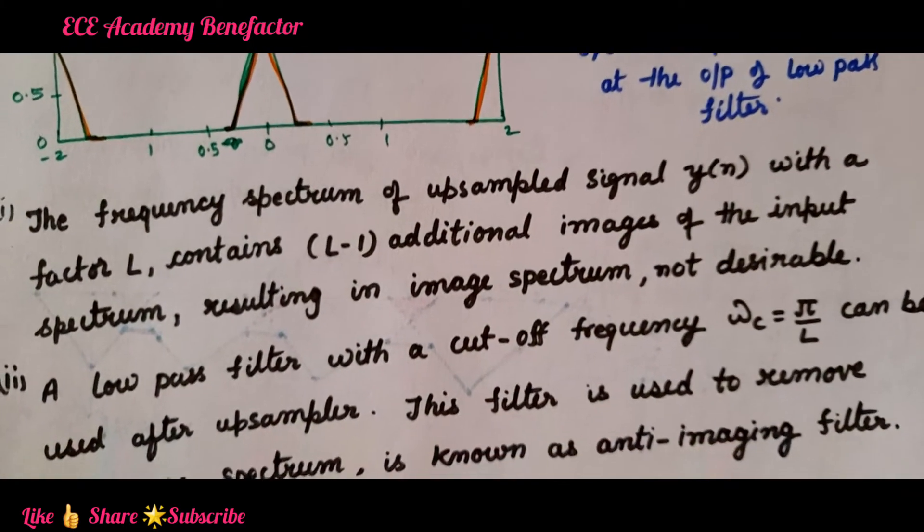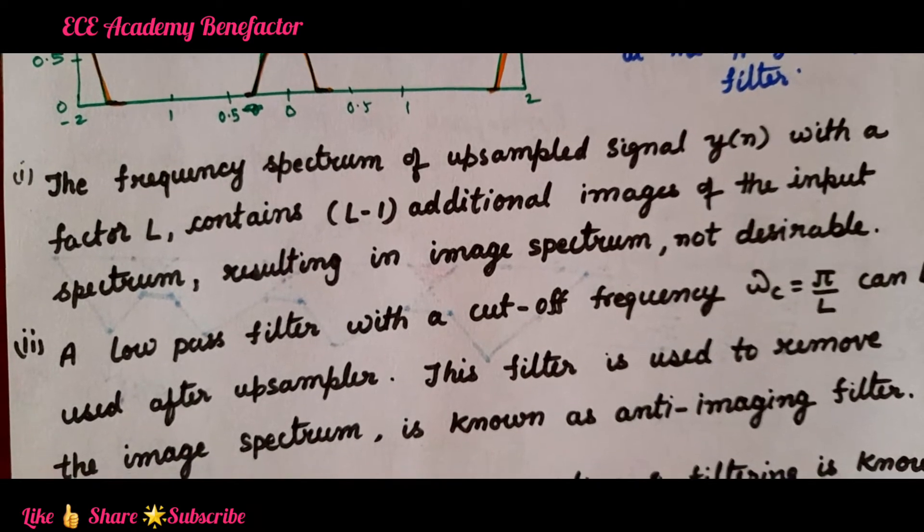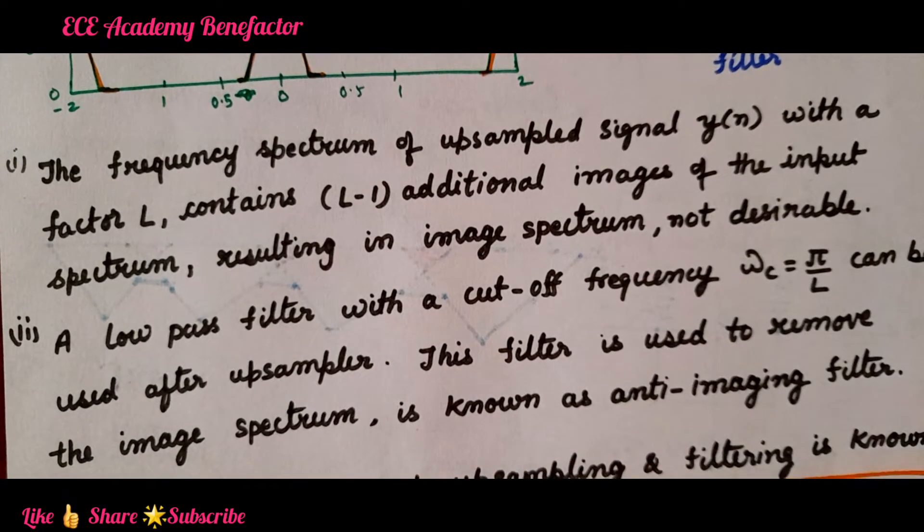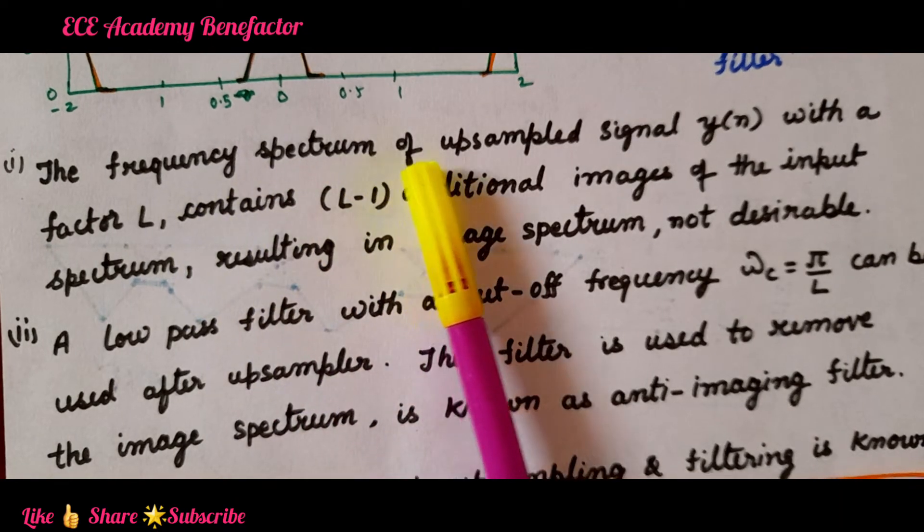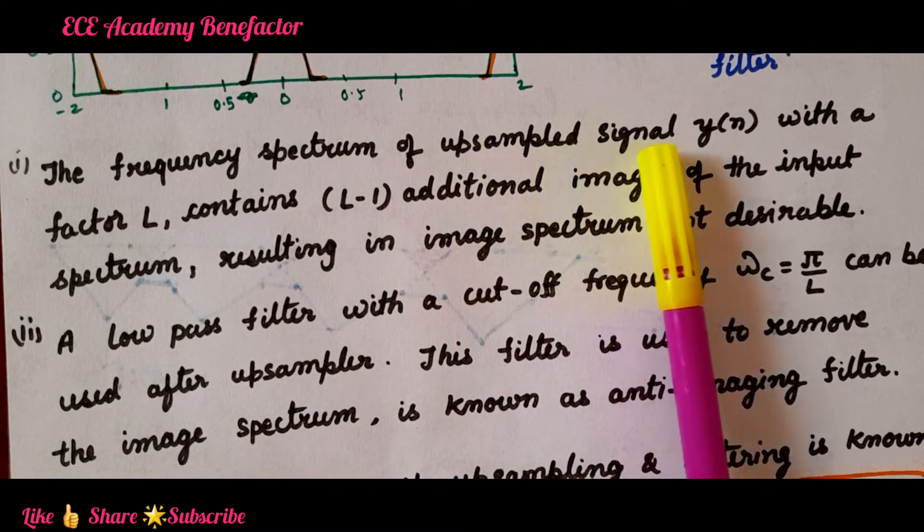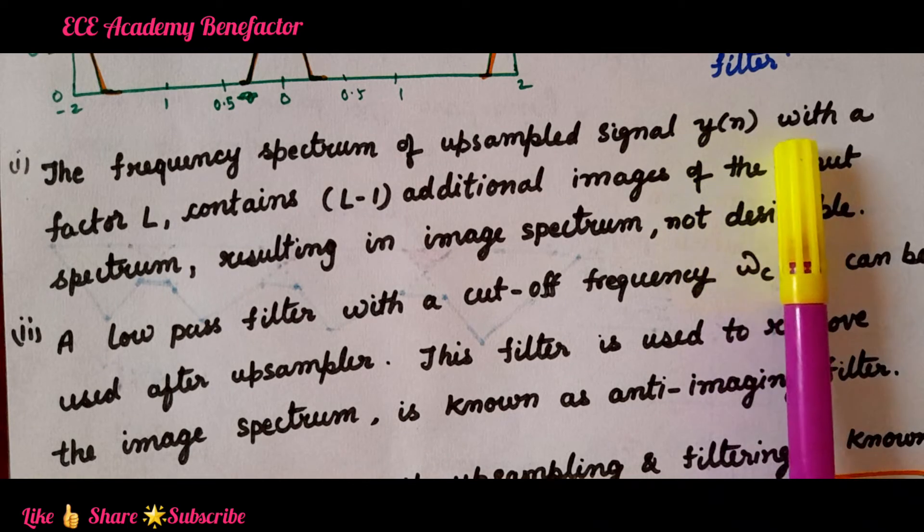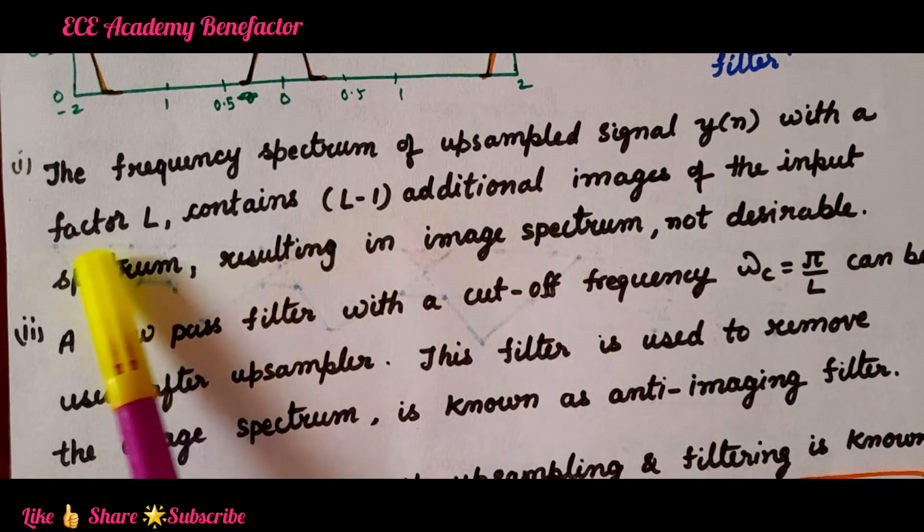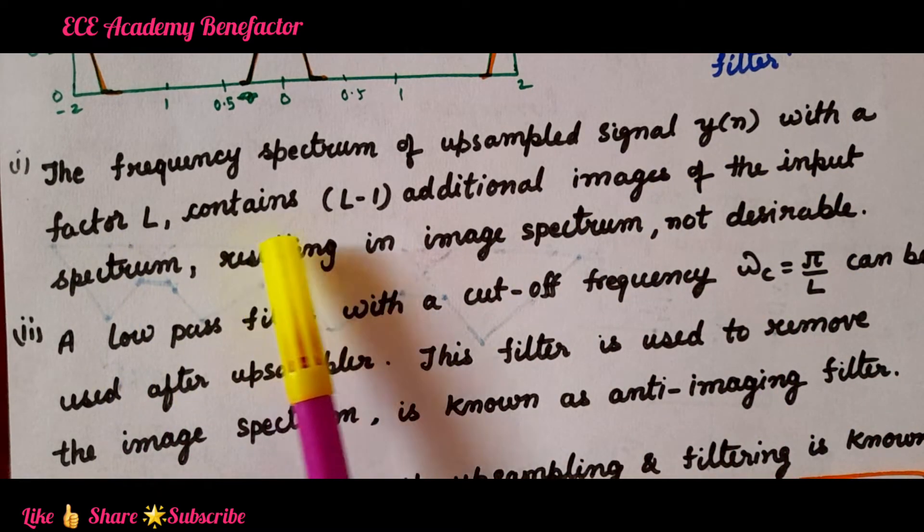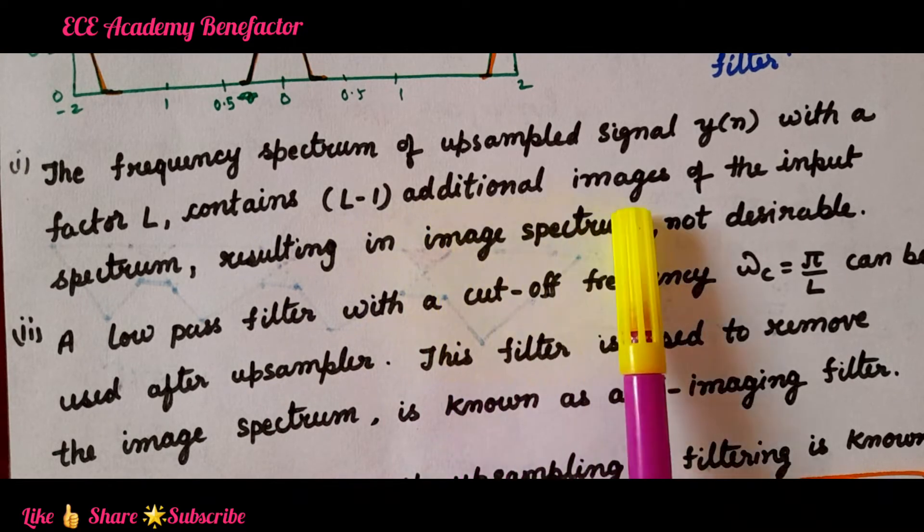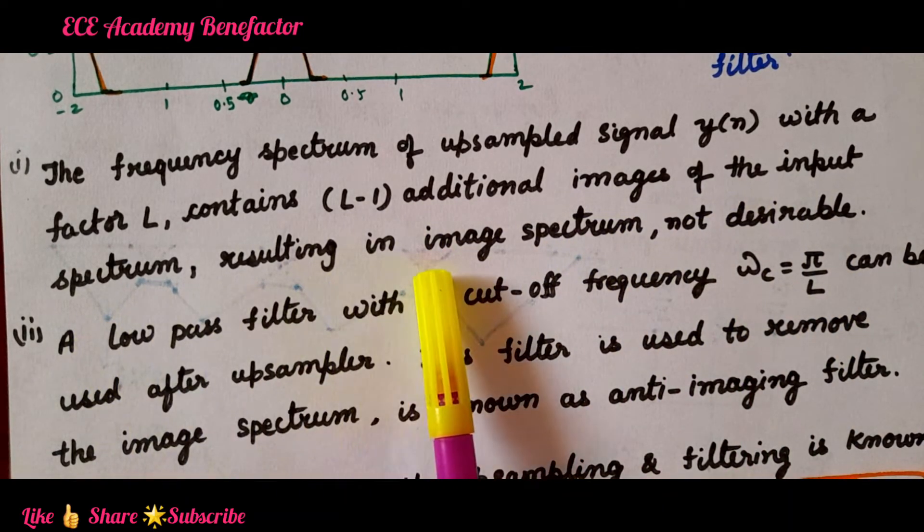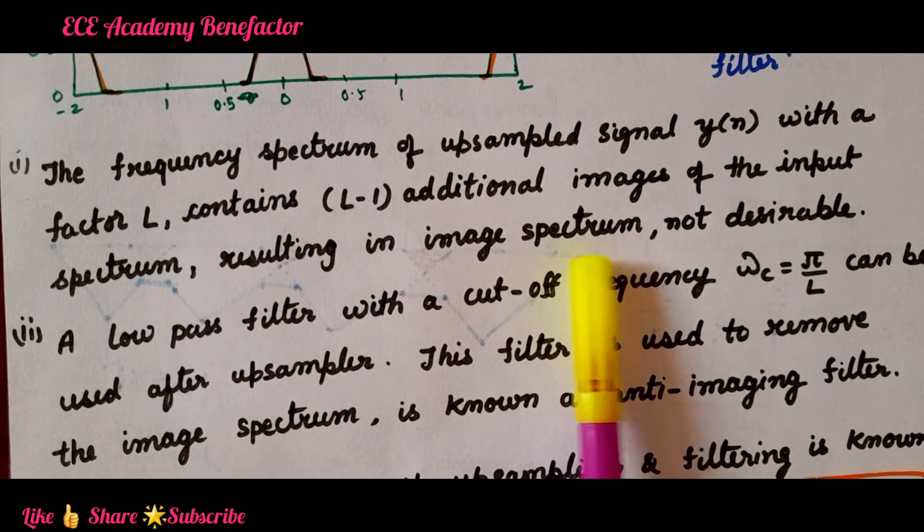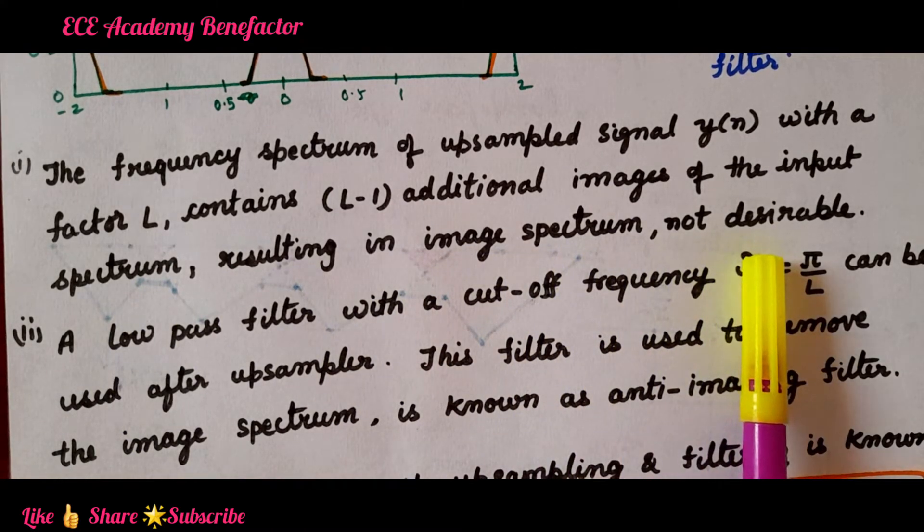Which is been described in words here in three points. The first point is the frequency spectrum of upsampled signal y(n) with a factor capital L contains L minus 1 additional images of the input spectrum resulting in image spectrum which is not desirable.